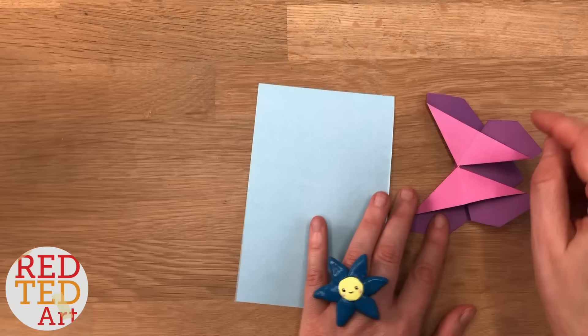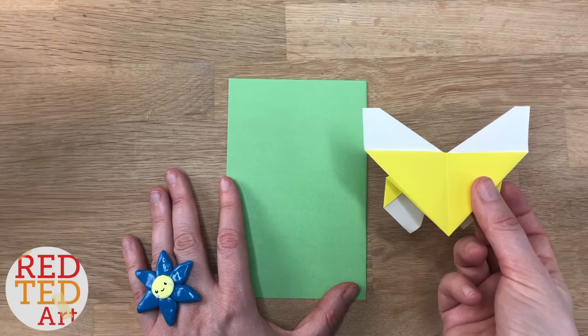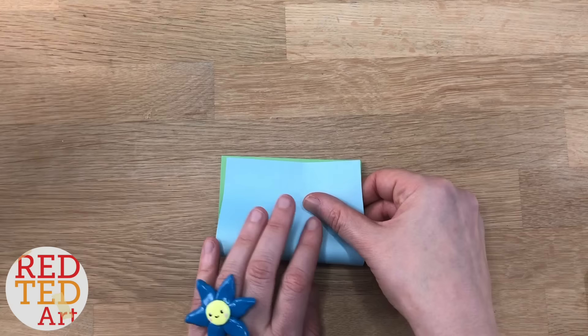Now you have to choose whether you want your butterfly contrasting colors to be the blue on this side or on this side. I want the blue to be on the main butterfly, so I'm going to turn it around with the green on the other side. You can use two-tone, like white and yellow paper. You don't have to use this two-colored origami paper, or you can just use white paper and decorate it with pens. It's totally up to you.